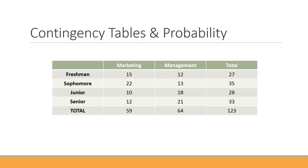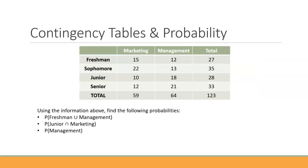Let's take a look at this contingency table. We have classes: freshmen, sophomores, juniors, and seniors, and then a couple different majors — marketing majors and management majors. With this table, we can find three probabilities: the probability of a freshman or a management major, the probability of a junior and marketing major, and just the probability of a management major.